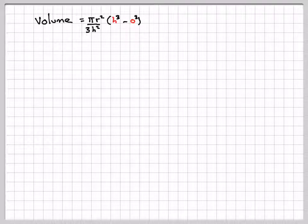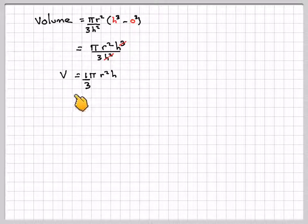0 cubed is 0, so we're going to be left with pi r squared h cubed over 3h squared. And now we can see that the h squared here will cancel out. And we're just going to be left with a formula that we all know as 1 third pi r squared h. Which is the formula that we've all been told at high school.